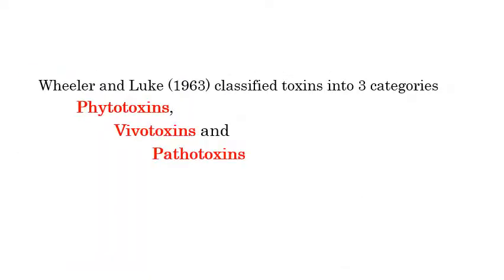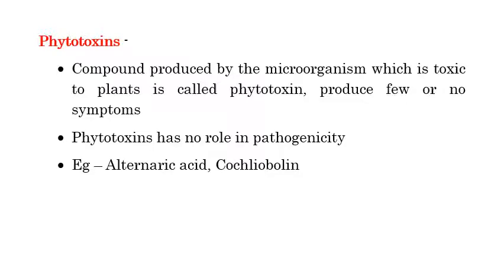Wheeler and Luke in the year 1963 classified toxins into three categories: phytotoxins, vivotoxins, and pathotoxins. We will see one by one what is a phytotoxin, what is a vivotoxin, and what is a pathotoxin.